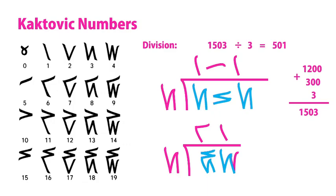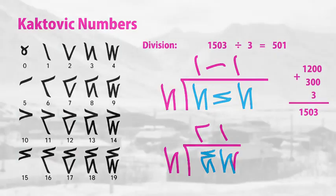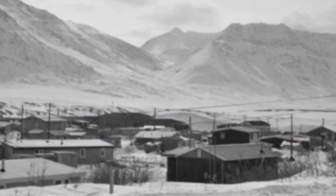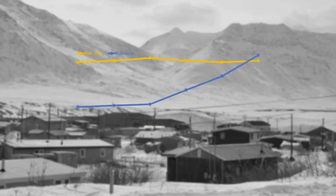The students who created this system began teaching it to the younger students, and it eventually was added to the local curriculum. Math scores in Kaktovic were typically in the lower 20th percentile, but in 1997—just two years after these numbers were introduced—math scores shot up above the national average.